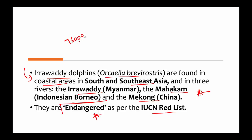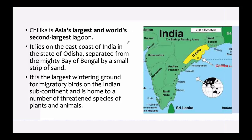The total population of these aquatic mammals in the world is estimated to be less than 7,500. More than 6,000 Irrawaddy dolphins have been reported from Bangladesh. Dolphin distribution in Chilika is considered to be the highest single lagoon population. Lagoons are water bodies separated from bigger water bodies by a natural barrier, which could be sand or coastal reefs. Chilika is Asia's largest and the world's second largest lagoon.